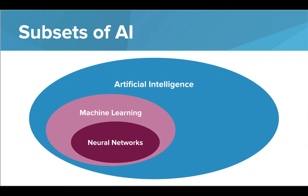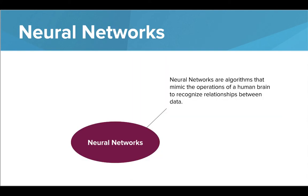Machine learning represents a large portion of AI algorithms, so much so that there are subsets of algorithms within machine learning. One such set is neural networks. Neural networks are algorithms that mimic the operation of a human brain to recognize relationships between data. Neural networks consist of layers of artificial neurons that work together to produce an output.